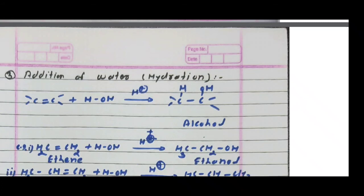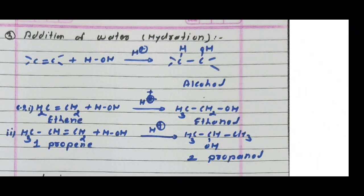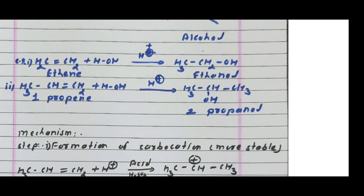The general reaction is: alkene plus water (hydration) gives alcohol; the reverse — dehydration — removes water from alcohol to give alkene. Example: ethene (CH₂=CH₂) plus water in presence of dilute H₂SO₄ (acidic condition, H⁺) — one hydrogen atom attaches to one carbon and the OH attaches to the other carbon, forming ethanol (CH₃CH₂OH).